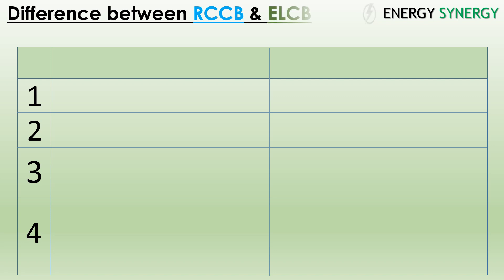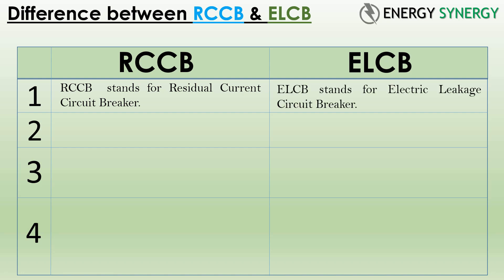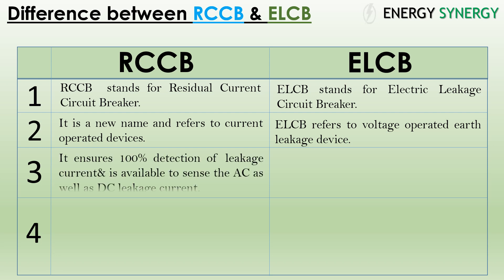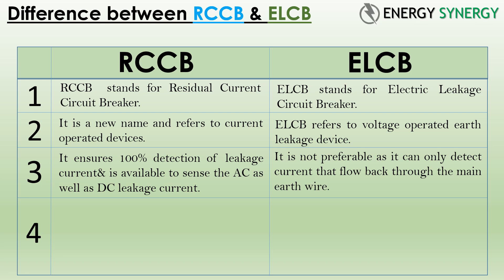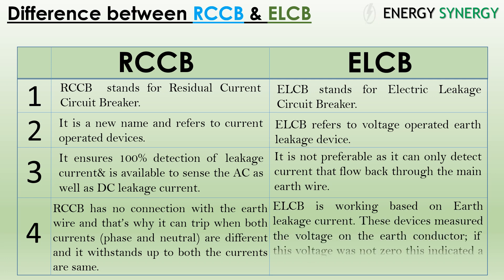Comparing RCCB and ELCB: RCCB stands for Residual Current Circuit Breaker and is a new name referring to current-operated devices, while ELCB stands for Earth Leakage Circuit Breaker and refers to voltage-operated earth leakage devices. RCCB ensures 100% detection of leakage current and is available to sense both AC and DC leakage current. ELCB is not preferable as it can only detect current that flows back through the main earth wire. RCCB has no connection with the earth wire and can trip when phase and neutral currents differ, holding as long as both currents are equal. RCCB works based on earth leakage current, whereas ELCB measures the voltage on the earth conductor — if this voltage is not zero, it indicates a current leakage to earth.